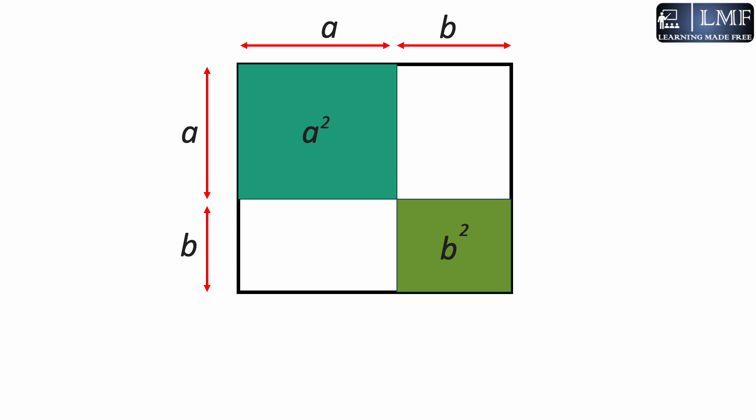Now we are left with two small rectangles with sides a and b. We all know that the area of a rectangle is equal to length into breadth, so the area of this smaller rectangle on the bottom left would come to be a into b, and the area of the other rectangle on top right would come to be again a into b.